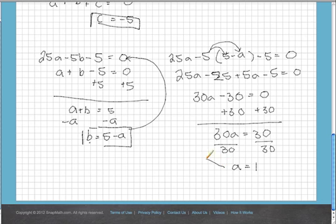And b is also very easy to solve for now, too, because b is equal to 5 minus a. Okay, so b is equal to 5 minus 1, which is 4.